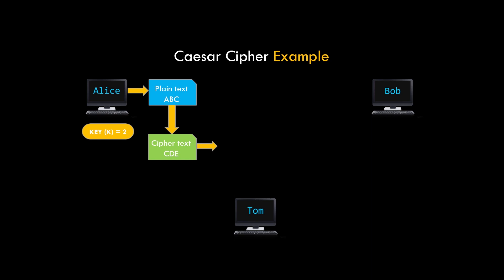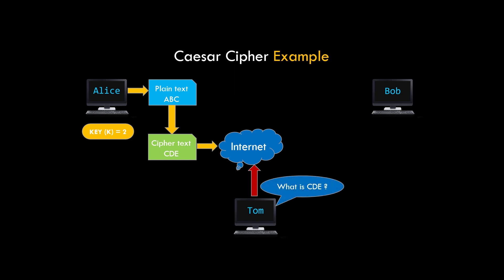Tom, being an unauthorized person, doesn't know the key value or encryption technique. When Alice sends this message over the network to Bob, Tom intercepts it and gets the message CDE, which is not the actual message, so he gets nothing out of it. Meanwhile, as the message reaches Bob, he decrypts it using the decryption process to get the original message.